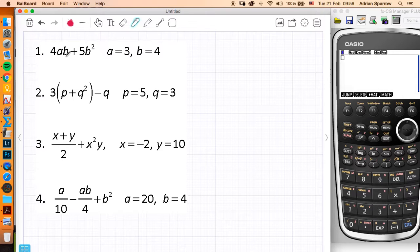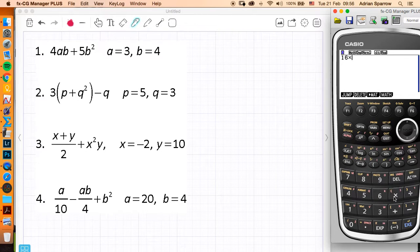OK, 4 times 3 times 4, so I'm going to do this in my calculator, that's 16 times 3, plus 5 lots of B squared, which is 16, B squared is 16, so that's going to give me 128.